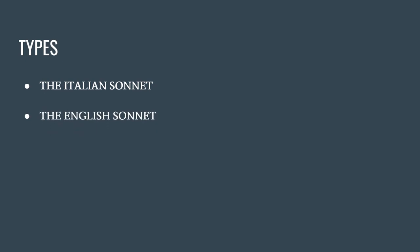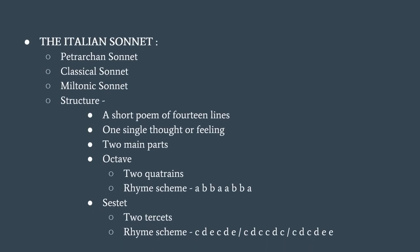There are two principal types of sonnets: the Italian sonnet and the English sonnet. From its brilliant use by Petrarch, the Italian sonnet is often known as the Petrarchan sonnet. Sometimes it is called the classical sonnet, as being the model which other countries followed. Petrarchan sonnets are also called Miltonic sonnets because Milton wrote his 24 sonnets according to the Petrarchan rhyme scheme.